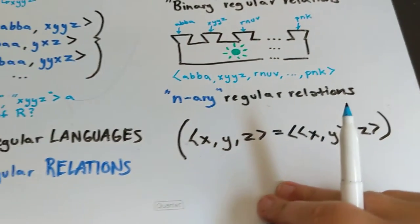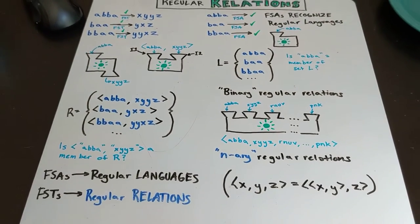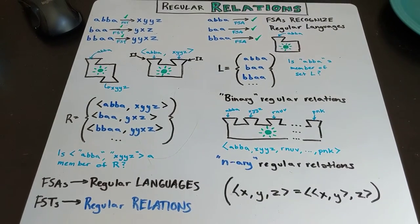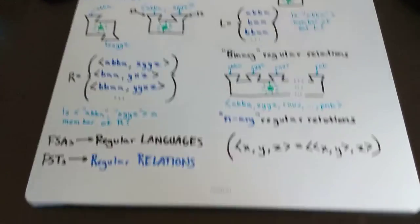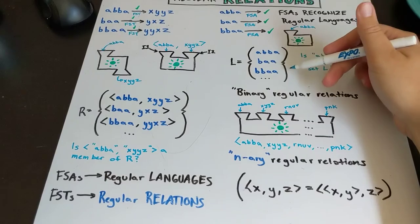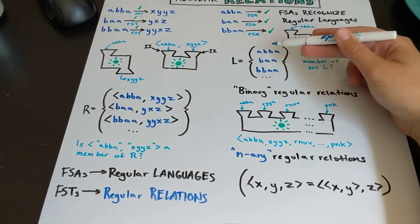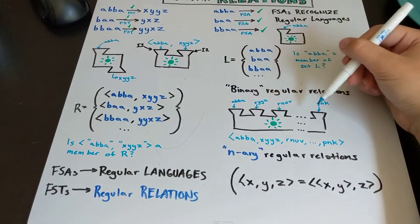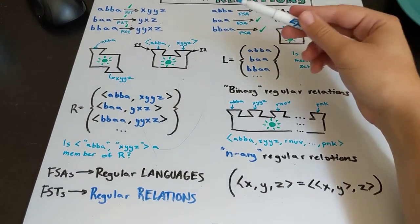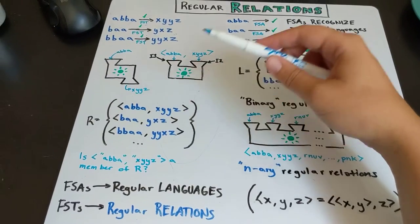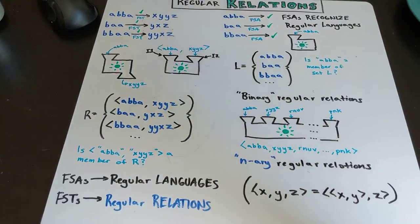In the next video we will talk about how we deal with the regular relations just like we talked about the properties of regular languages, languages that are generated by regular rules. We're going to talk about regular relations which are relations generated by FSTs.